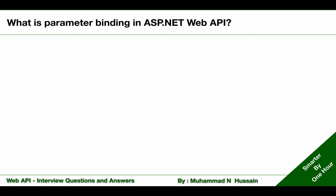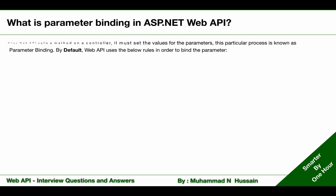What is parameter binding in ASP.NET Web API? When a Web API calls a method or action on a controller, it must set the values for the parameters. This particular process is known as parameter binding. By default, Web API uses the following two rules in order to bind the parameters.